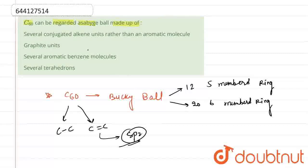So in the case of C60, looking toward the options, it is saying that C60 can be regarded as a buckyball that is made up of. So first option, it is saying several conjugate alkene units rather than an aromatic molecule. So this statement is true. Second, it is saying that it is made up of graphite units. This is not correct.